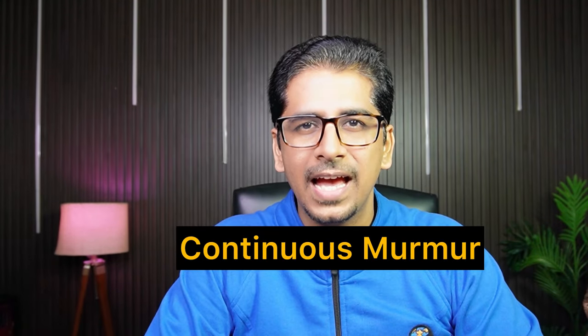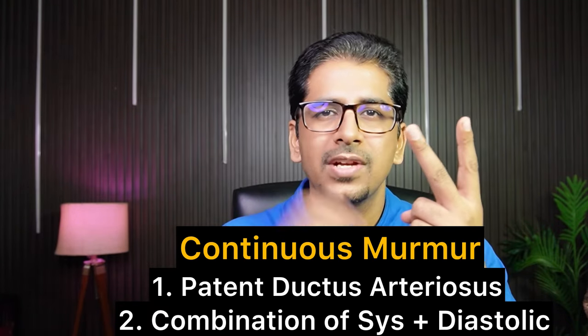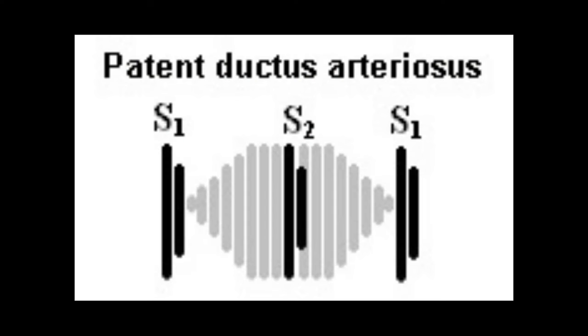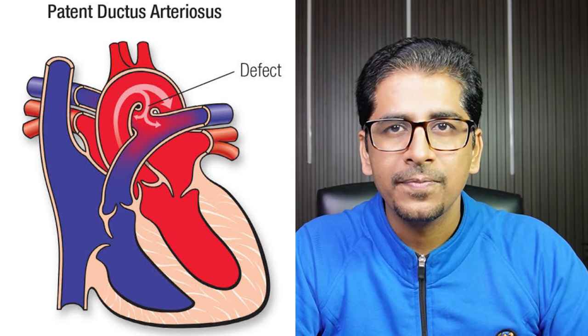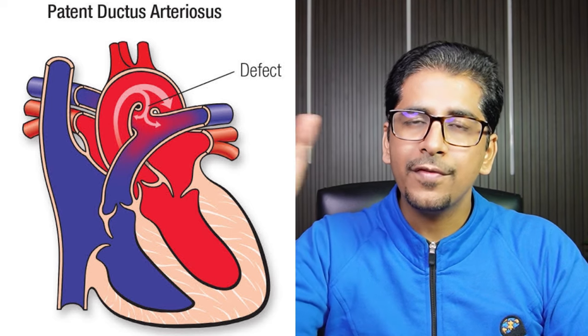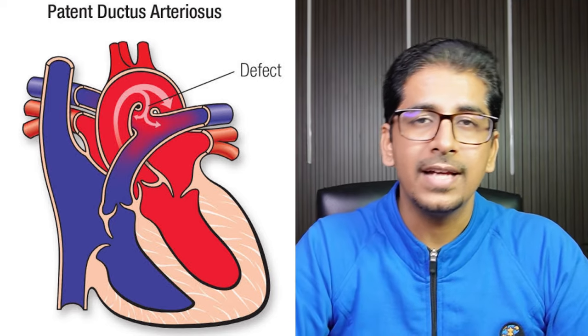The last murmur is the continuous murmur, present in PDA — patent ductus arteriosus — or in a combination of systolic and diastolic murmur causes. In PDA, there is an abnormal connection between the aorta and pulmonary artery, so blood flows continuously throughout the cardiac cycle, producing what we call a machinery murmur. It gets accentuated during systole.